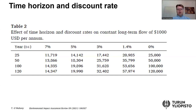I took this table to illustrate how big an impact the discount rate and the time horizon can make, and this is from an article by O'Mahony in 2021. The table considers a constant long-term flow of 1,000 US dollars per year — it could be a benefit flow, a cost flow, or a net benefit of 1,000 dollars per year.